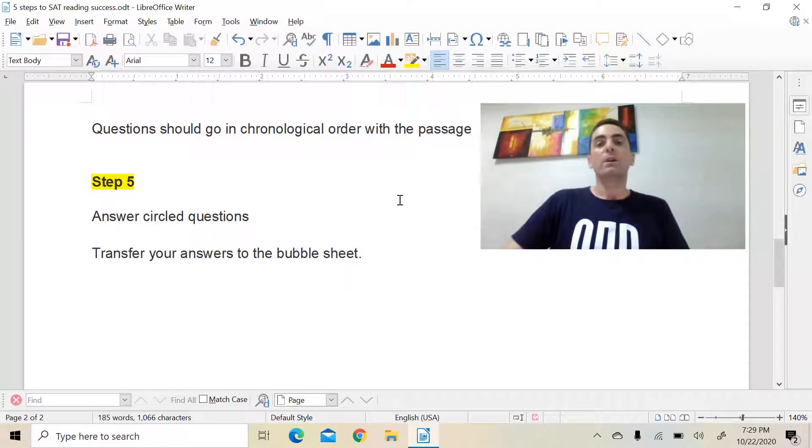Step five is answering the circle questions. So by this stage, you should have a very detailed understanding of what the text is about, where everything is, everything's located within that text. And then you can start answering those bigger picture questions, those main idea questions. And you're much more likely to get them right if you answer them at the end. If you answer them at the start, good luck. It's just a very bad technique to do that. And once you've answered the main idea, big picture questions, then you just transfer your answer to your bubble sheet and you are done.